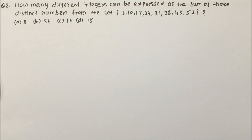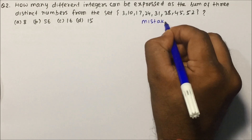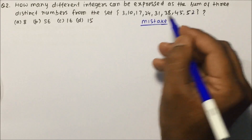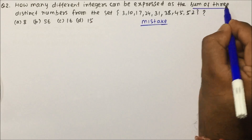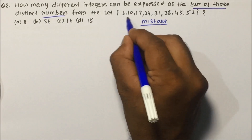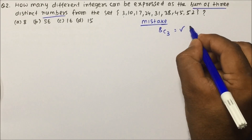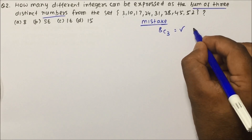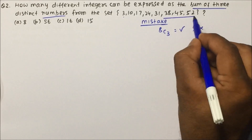Let's move to question number two, which is very important. This kind of question is generally asked in TCS exams, and I've seen many students make mistakes here. The question asks: how many different integers can be expressed as the sum of three distinct numbers from a set of eight numbers? A common mistake is to calculate 8C3 — but that's not what's being asked.